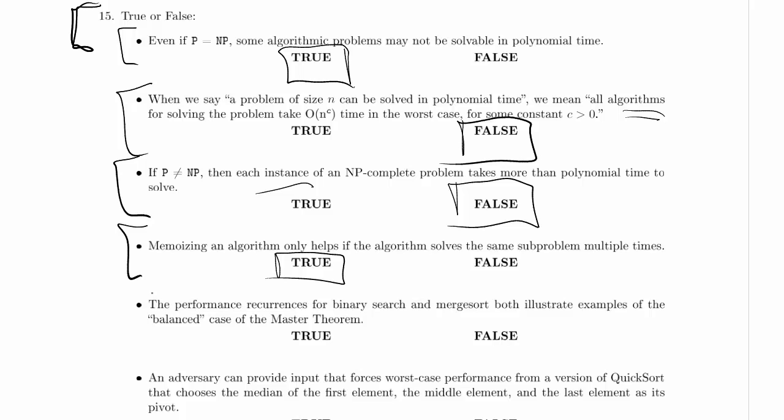The performance recurrences for binary search and merge sort both illustrate examples of the balanced case of the master theorem. Let's forget about the master theorem for the moment and let's just look at what the recurrences are. So for binary search, it's T(n) equals T(n/2) plus 1, or some constant. And for merge sort, T_ms(n), that's 2T merge sort of n over 2 plus n, or c times n, or O(n), or something like that.